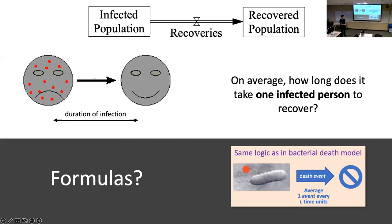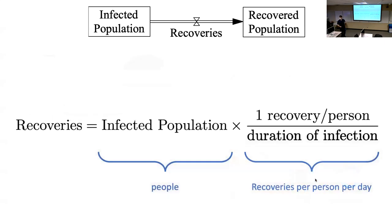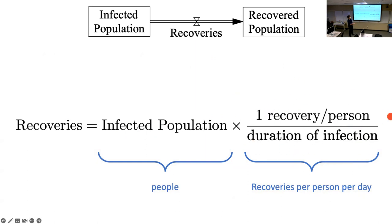When we did this with bacteria, we knew the average lifetime and the formula for the deaths flow was just the number of bacteria divided by the average lifetime. Here, the number of recoveries is just every person in the infected population contributing one recovery after an average duration of infection. To get how many people are moving from infected to recovered, we multiply that individual rate by the total number of people.